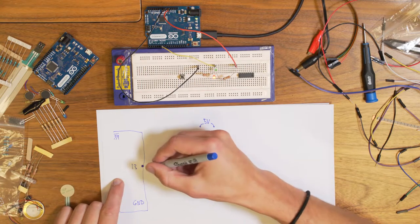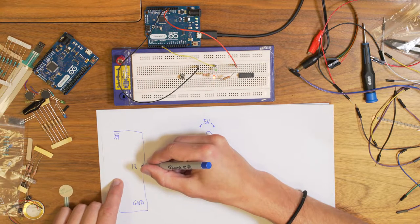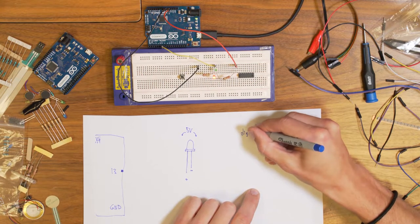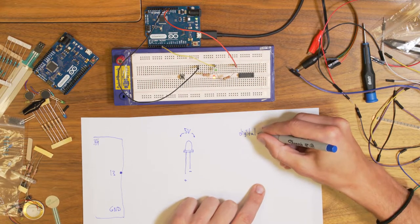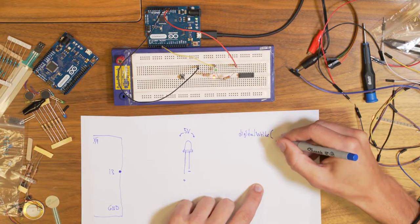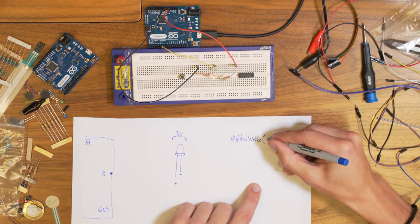So what happens in this case is that when you write, you do digital write, the function inside your software, inside your program. And you assign a number in this case, 13.